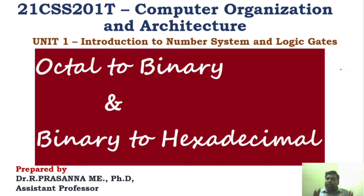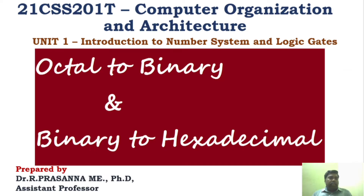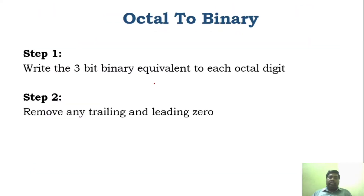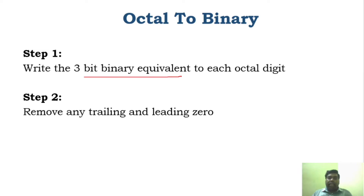It is a very simple conversion, but you have to remember the logic behind it. We have already seen how to represent an octal number. An octal number can be represented using 421 code, and a hexadecimal can be represented using 8421 code. We will start with octal to binary conversion. For any octal number, first you have to write the corresponding equivalent binary number using the 421 code.